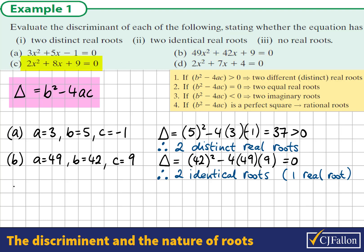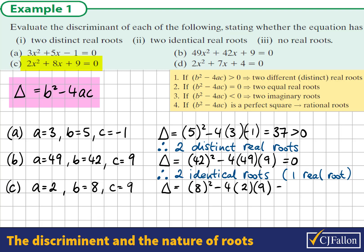In part c, we have 2x squared plus 8x plus 9 is equal to 0. So here, a is 2, b is 8, and c is 9. The discriminant becomes 8 squared minus 4 times 2 multiplied by 9. When we evaluate this, we see we get negative 8.